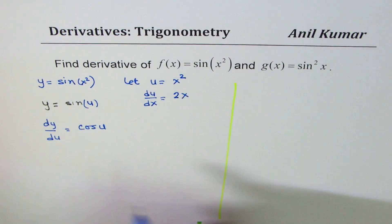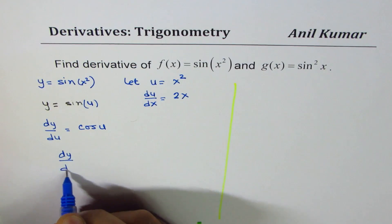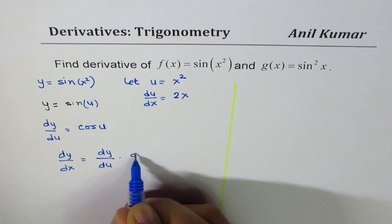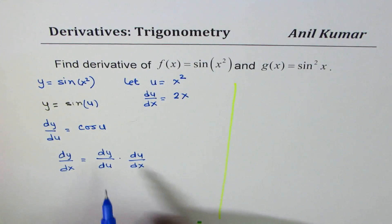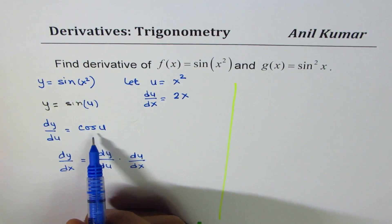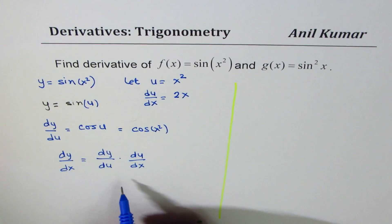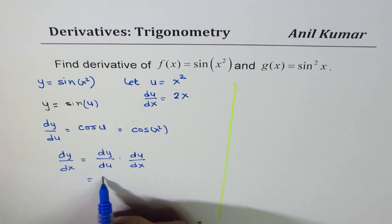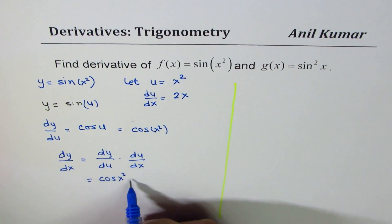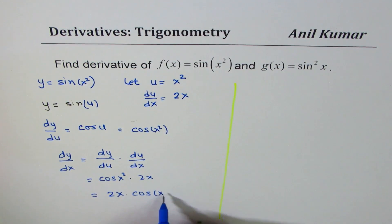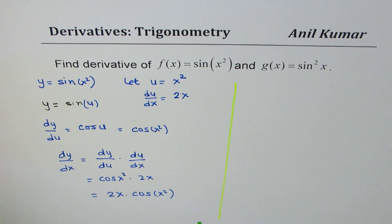Now we need to find dy/dx, and we can apply the chain rule: dy/dx = (dy/du) × (du/dx). Here dy/du is cos(u), and since u = x² we write that as cos(x²). Multiplying by du/dx which is 2x, we get the answer: 2x·cos(x²). That is the derivative of sin(x²).